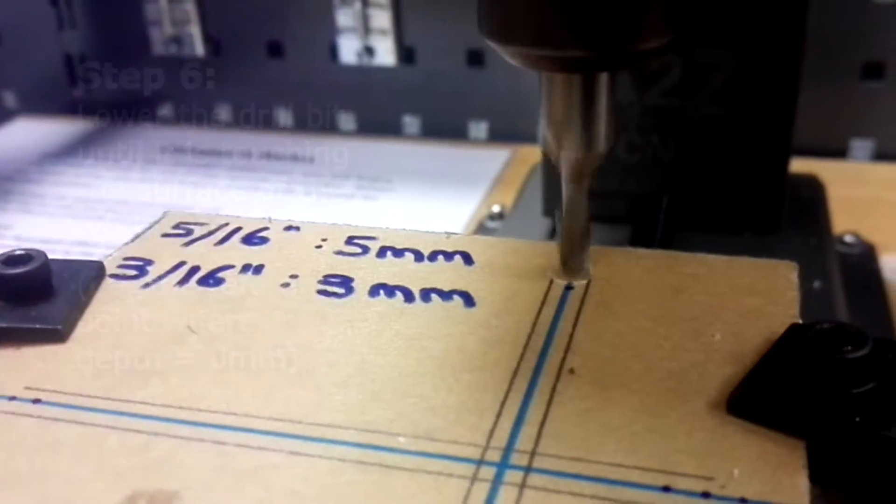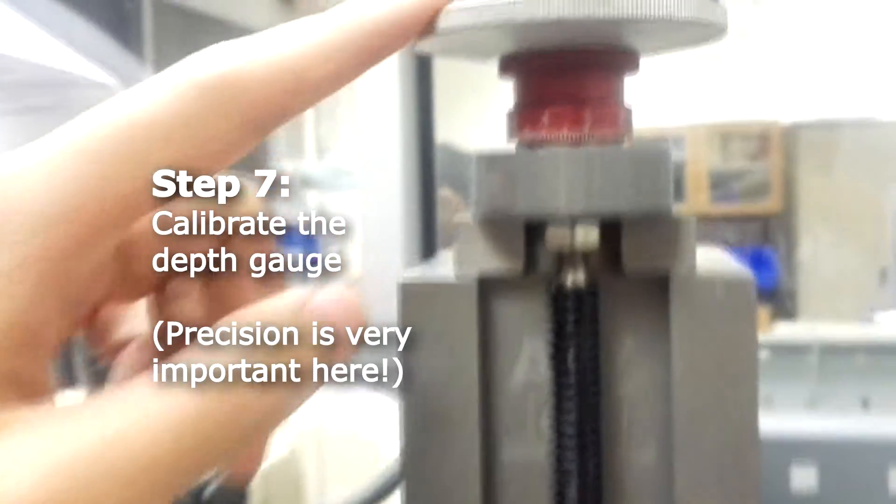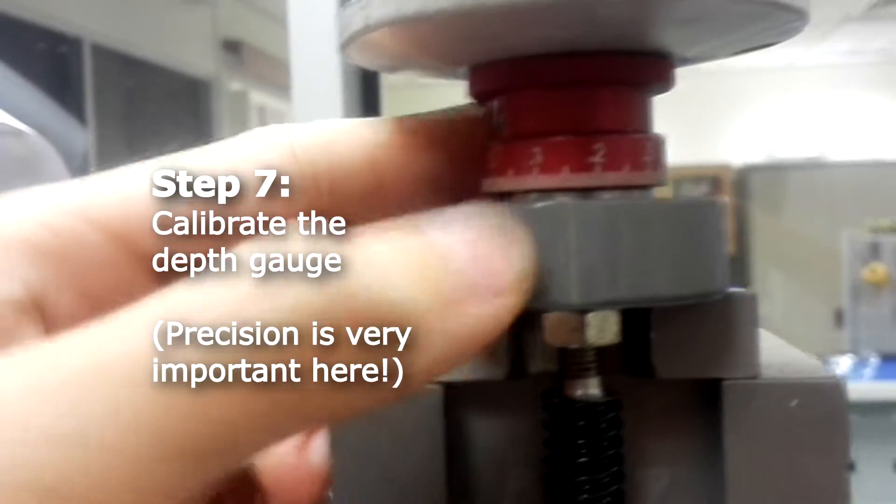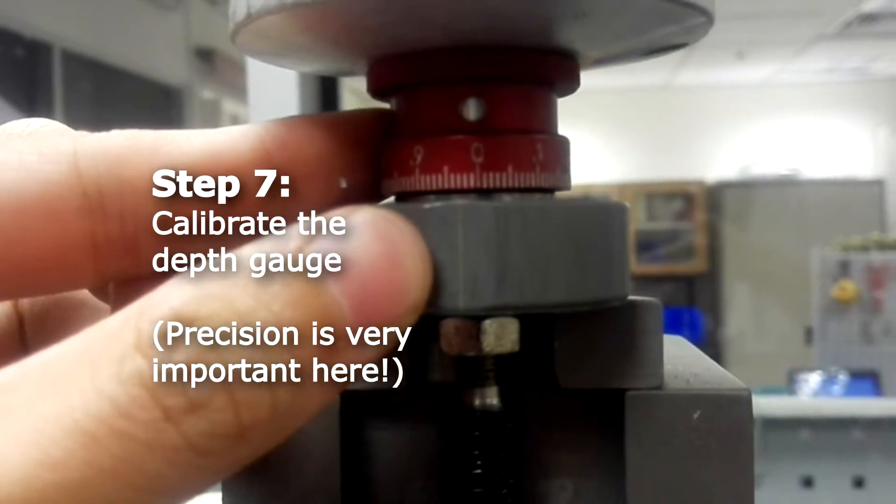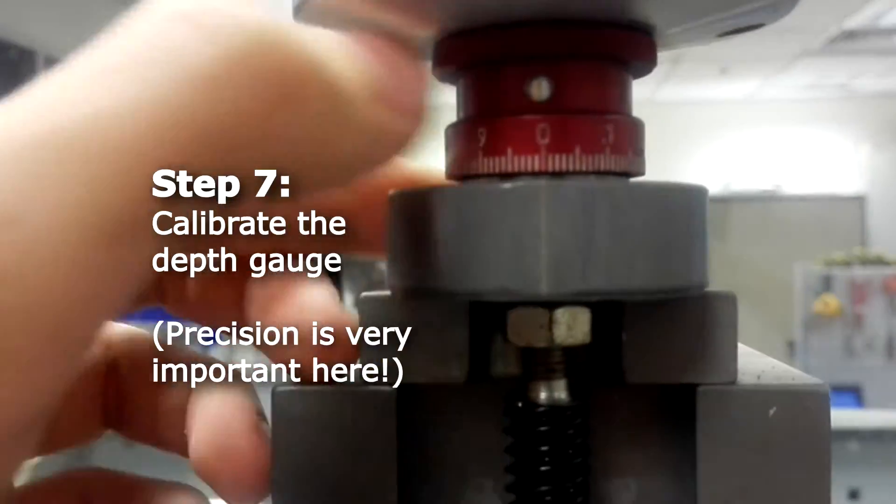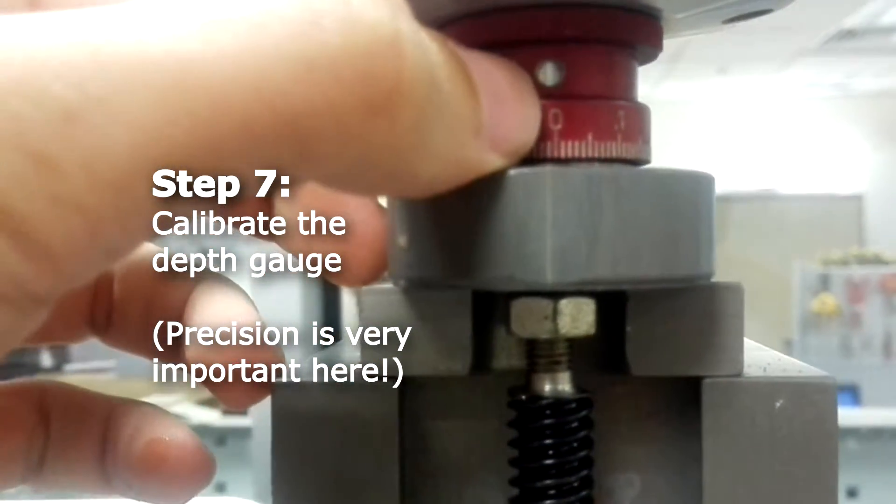Now, go back to your Z axis knob and spin the red ring such that this rubber line is in line with the zero mark.